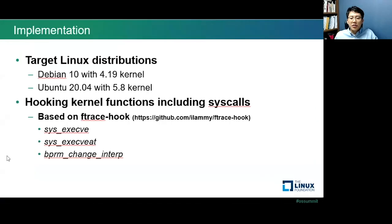Implementation. I implemented and tested the interpreter lock on Debian and Ubuntu — you can test it on those distributions. I implemented it based on the ftrace hook, which saved time on trial and error. The interpreter lock hooks three functions: sys_execve, sys_execveat, and bprm_change_interp. I will talk more about these three functions in the next slide.